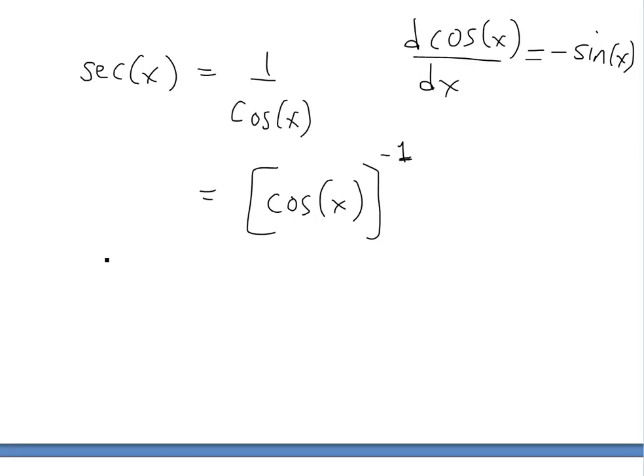So if we were to do the derivative, d sec(x) over dx, this would just equal to, we bring down this negative 1, so we're going to have cosine of x to the power of negative 2, so we subtract 1 from the exponent.